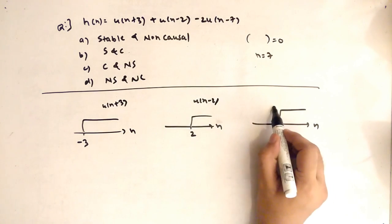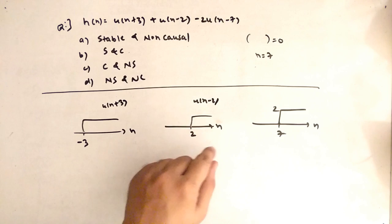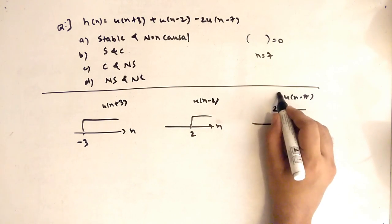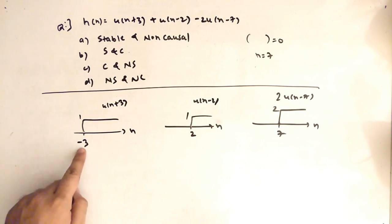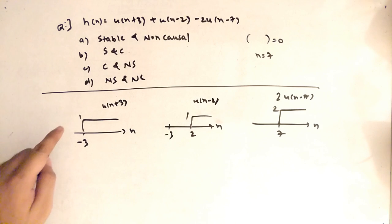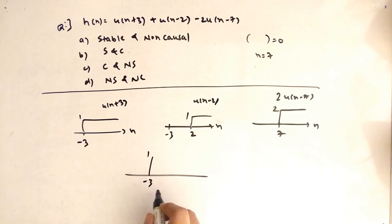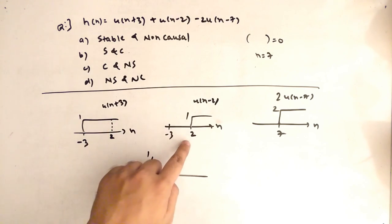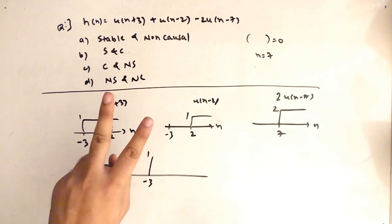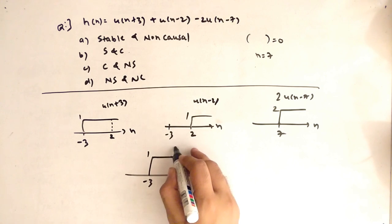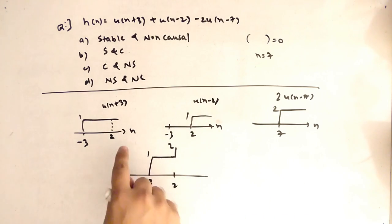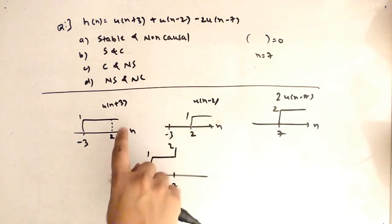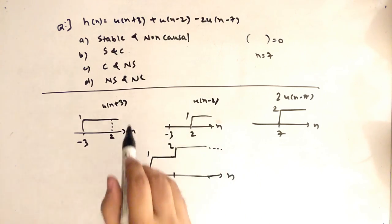For 2·u[n-7]: set n-7=0, giving n=7 as the starting point, following the u[n] graph with amplitude 2. Now adding u[n+3] and u[n-2]: at n=-3 amplitude is 1; at n=2, both graphs contribute amplitude 1 each, so combined amplitude becomes 1+1=2. This continues up to infinity.